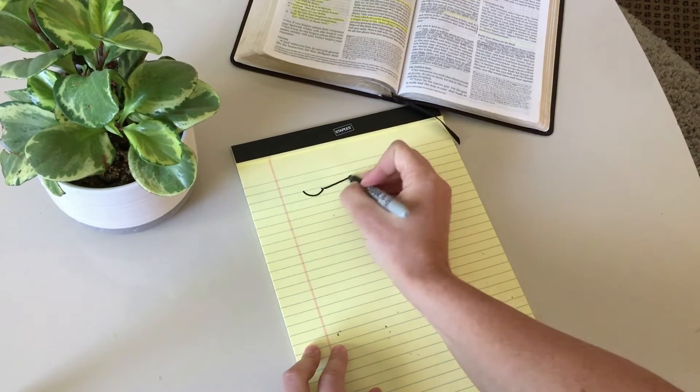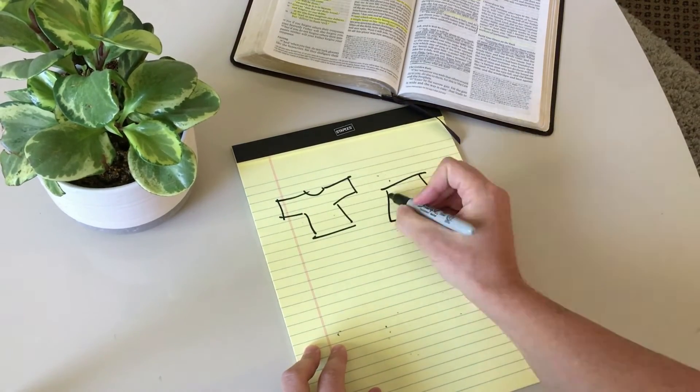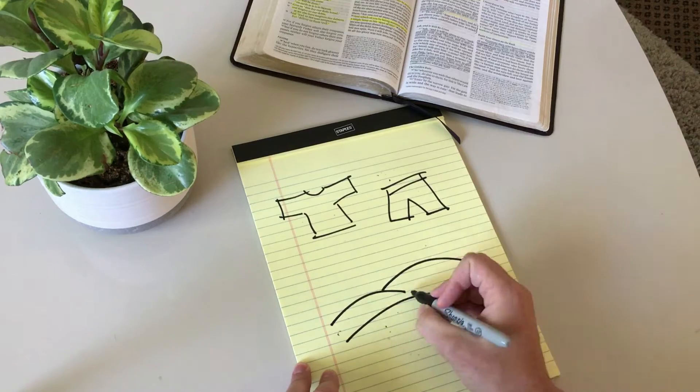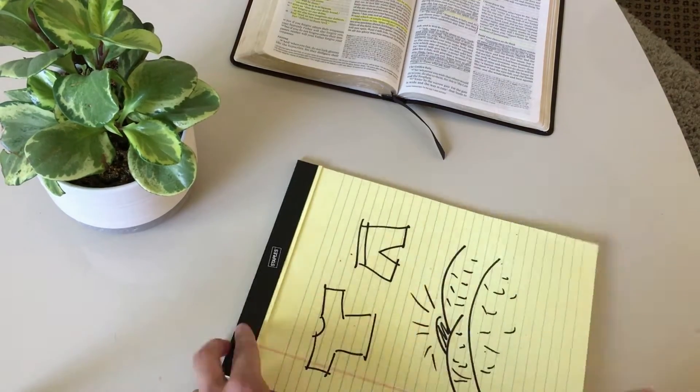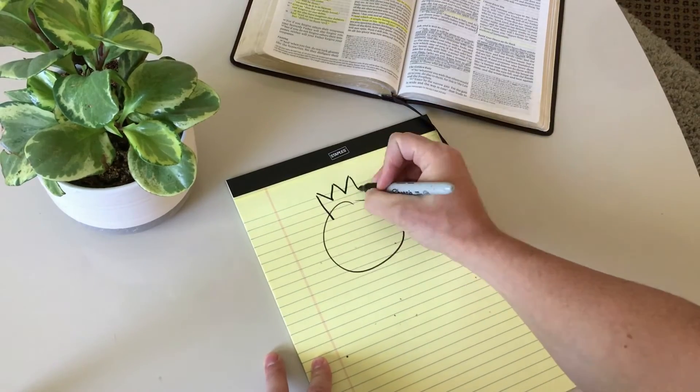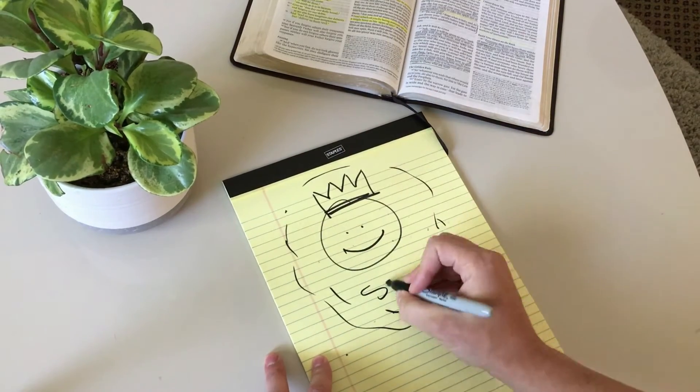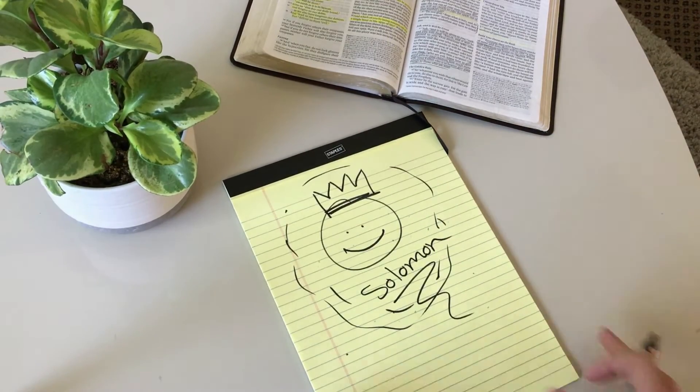And why are you anxious about clothing? Consider the lilies of the field, how they grow. They neither toil nor spin. Yet I tell you, even Solomon in all of his glory was not arrayed like one of these.